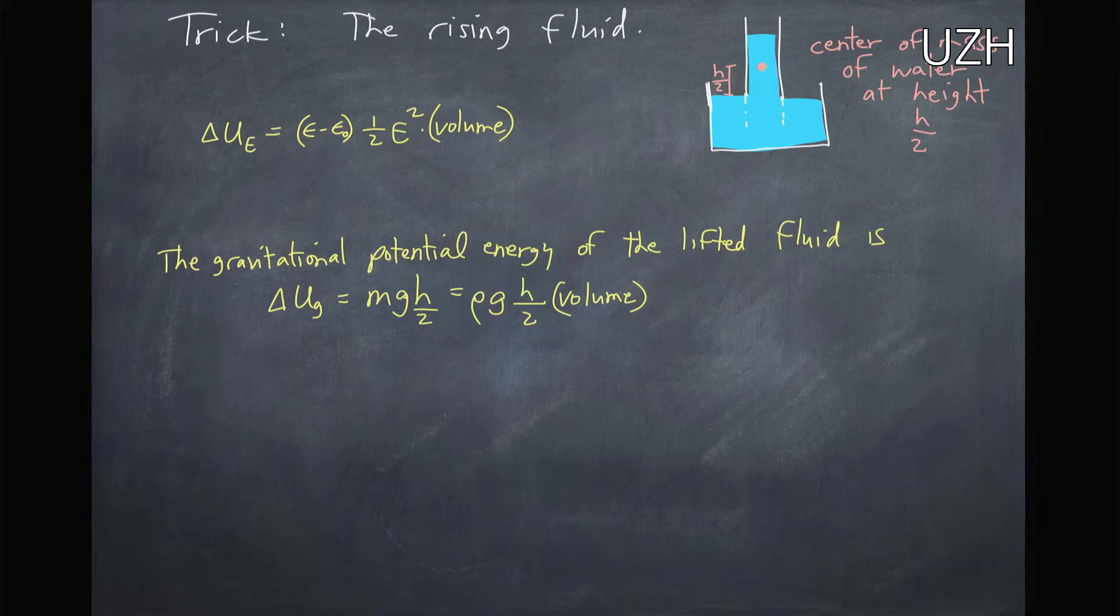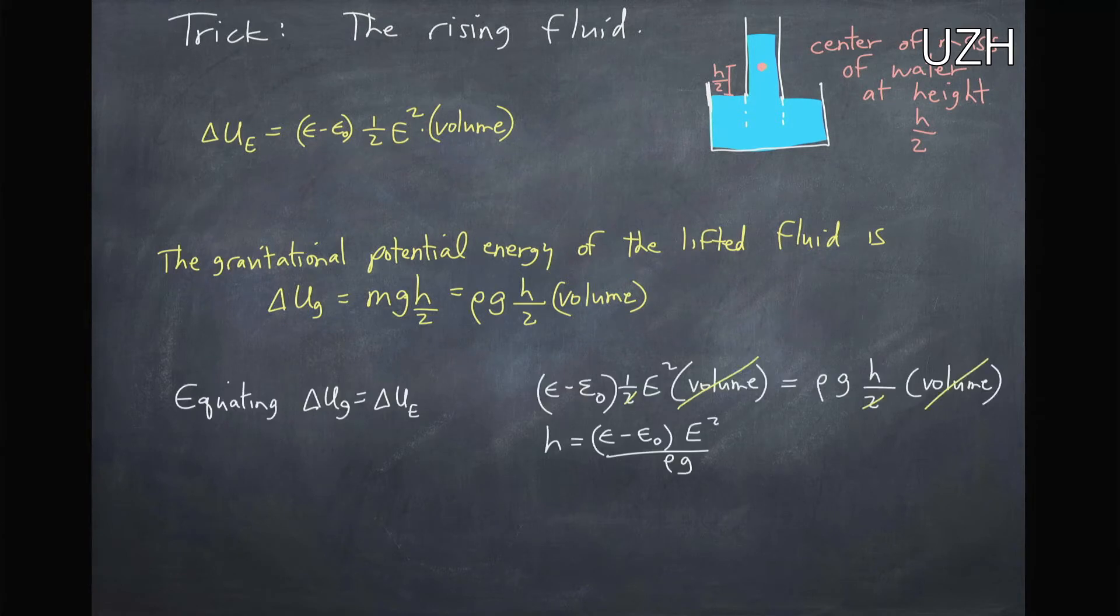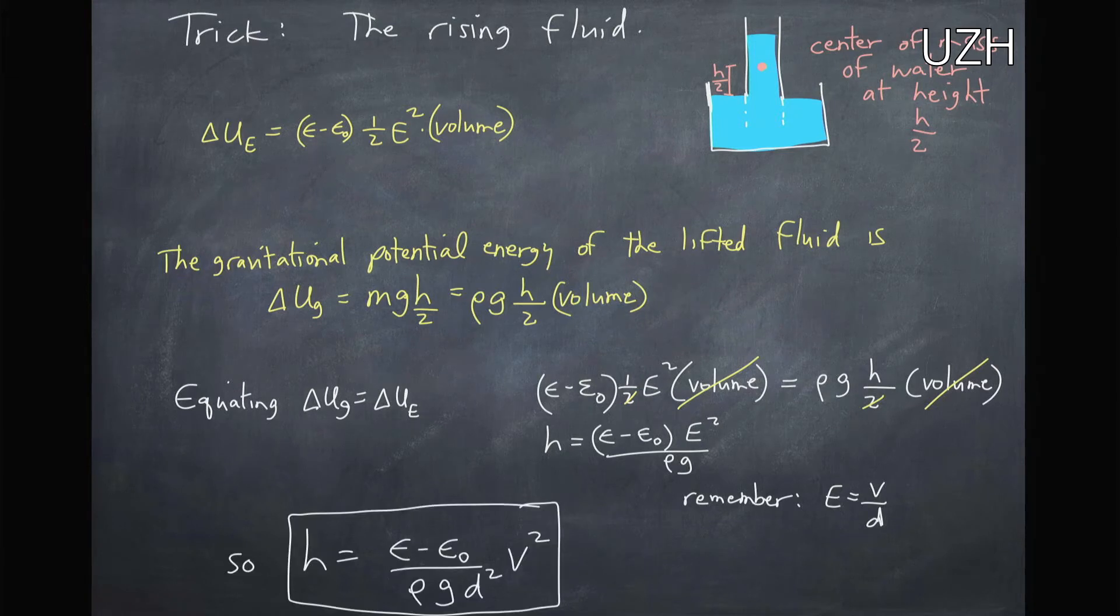So the energy that is required to raise this fluid is also the increase in the energy in the electric field. When I equate these two together I see that the volumes cancel out, the factor of 2 cancels out, and I have that the height is related to the electric field squared, the density, gravity, times these constants. If you remember, the electric field of a parallel plate capacitor is the voltage divided by the distance, and so we can now write the height as a function of the voltage.